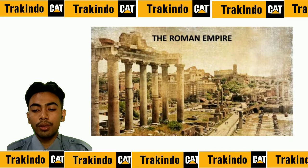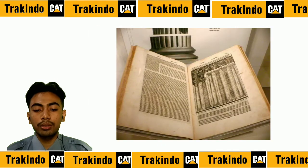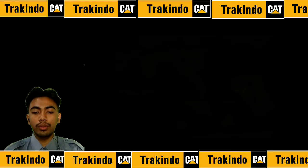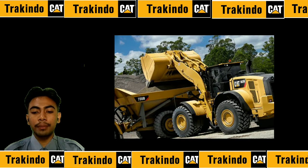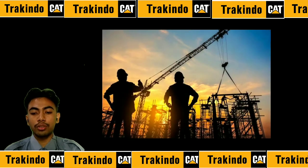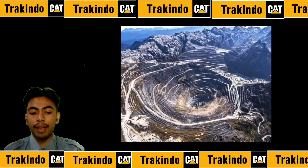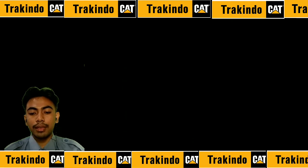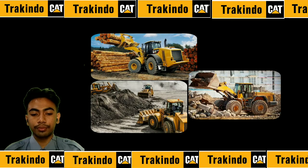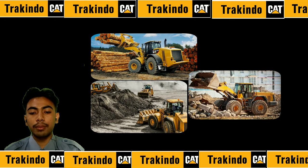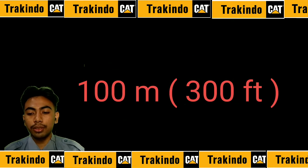The use of heavy equipment has been carried out since Roman times. Now let's start with wheel loaders. Wheel loaders are used in building construction, the forestry industry, heavy construction, and the mining industry because they can perform a wide variety of jobs. Wheel loaders are the most suitable machine for moving light excavated materials, fill materials, and blasting materials.